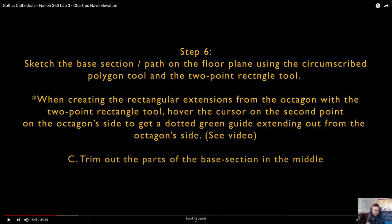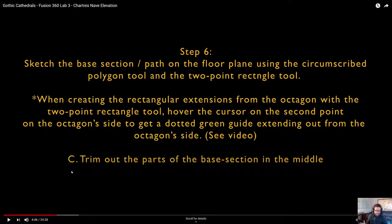This is a pretty big step. You've sketched the base profile. Now you need to sketch a section or a path for that profile to move around. When I say a section, I'm imagining we're cutting a plane directly through the base of the pier. Then you're going to revolve this object or use it as a path around that shape. We're going to create a rectangular extension from this octagon with a two-point rectangle tool, making sure to hover the cursor over the second point in the octagon side to get the dotted green guide. Finally, we'll trim out the parts to get a seamless single object.